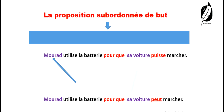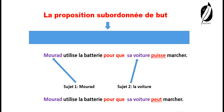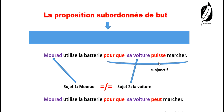Pour résoudre ce problème, on va chercher les sujets. « Morad utilise la batterie » — le sujet, c'est Morad. « Que sa voiture puisse marcher » — le sujet, c'est la voiture. On a deux sujets différents. Quand on a deux sujets différents, on utilise une conjonction plus la conjugaison du verbe au subjonctif. C'est la règle. La phrase correcte est la première. La deuxième phrase n'est pas correcte parce qu'elle ne respecte pas la règle.